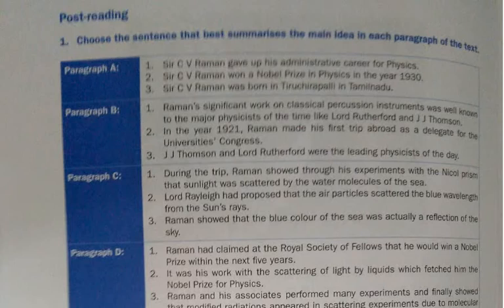Now we go on to paragraph C. What is the most important or main idea conveyed out of the three sentences? Go back to the paragraph, read it carefully, take a couple of minutes, then come back and give the answer. The most important point for paragraph C is the first one: during the trip, Raman showed through his experiments with the nickel prism that sunlight was scattered by water molecules of the sea.